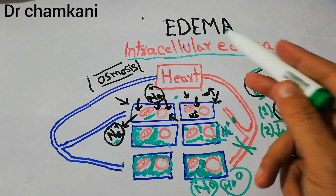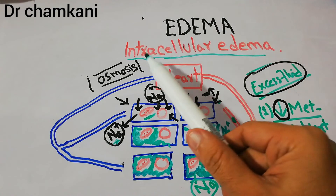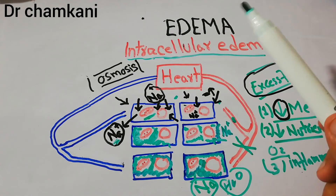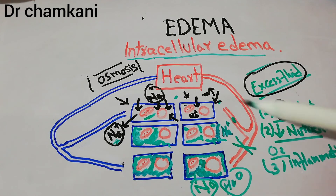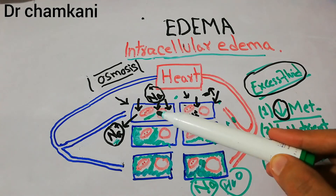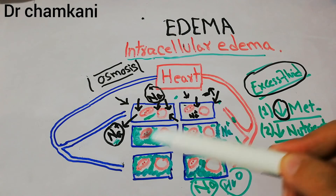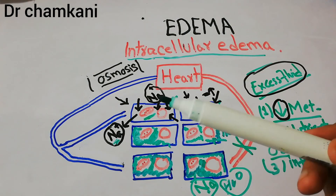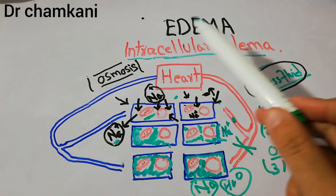To summarize: edema is excess fluid accumulation, either intracellular or extracellular. Intracellular edema is excess fluid inside the cells, and the three main causes are decreased metabolic activities, decreased supply of nutrients to the cells, and inflammation. All these lead to increased sodium entry or inability to expel sodium, and water follows the sodium into the cell via osmosis. Thanks for watching.